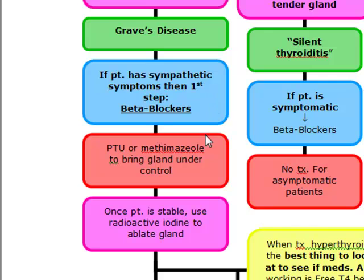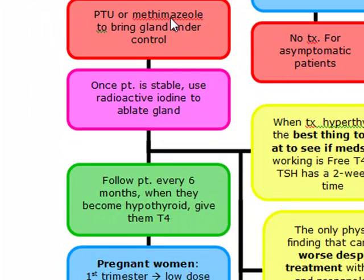Next, we're going to give PTU or methimazole to bring the gland under control. The only difference between PTU and methimazole is that PTU has a shorter half-life than methimazole — methimazole has about a five-and-a-half-hour half-life. But the main thing is that PTU can be used safely in pregnancy. We can't use methimazole in pregnancy because it can cause aplasia cutis in the baby, which is a scalp defect.